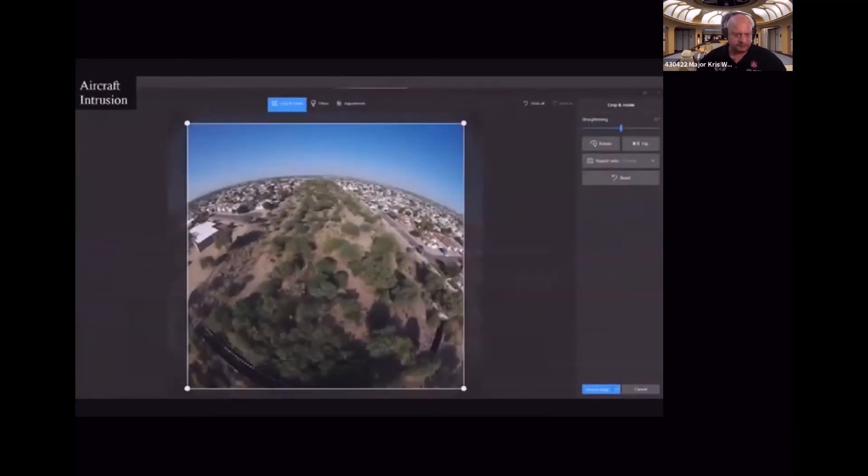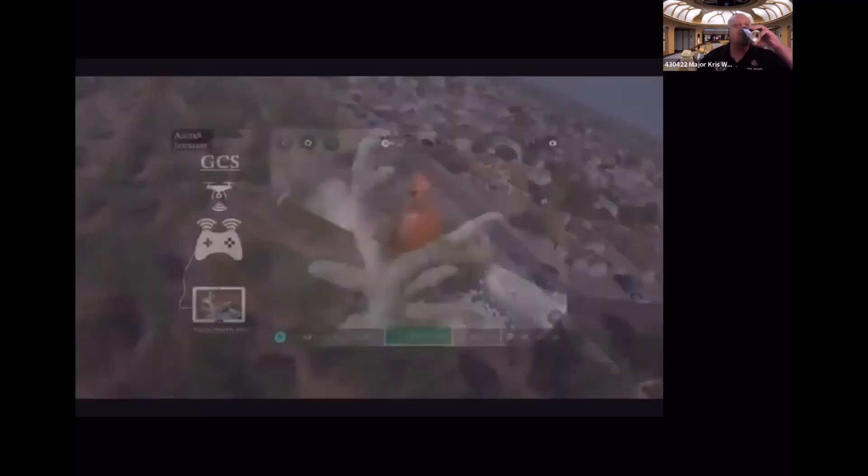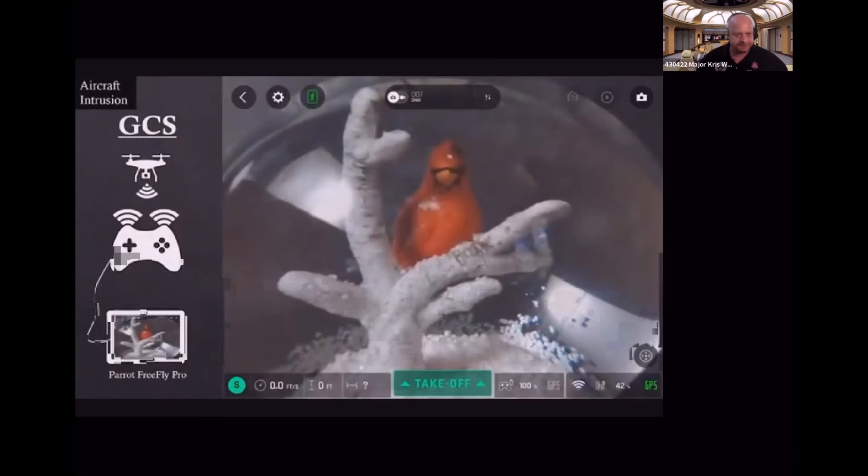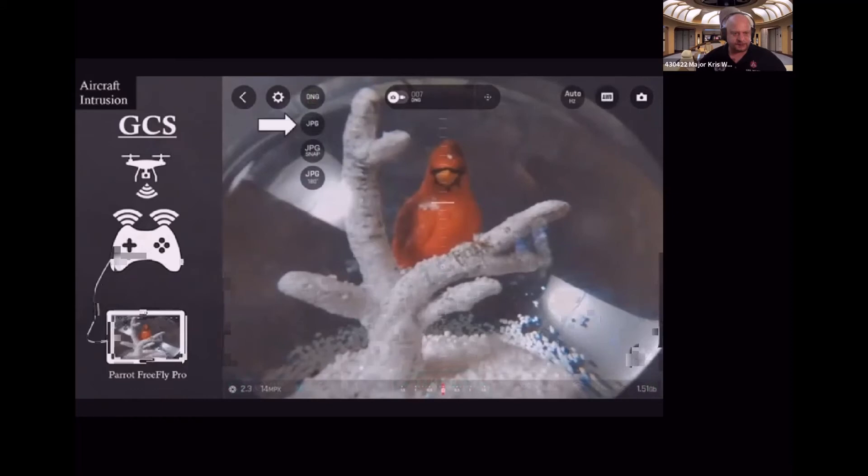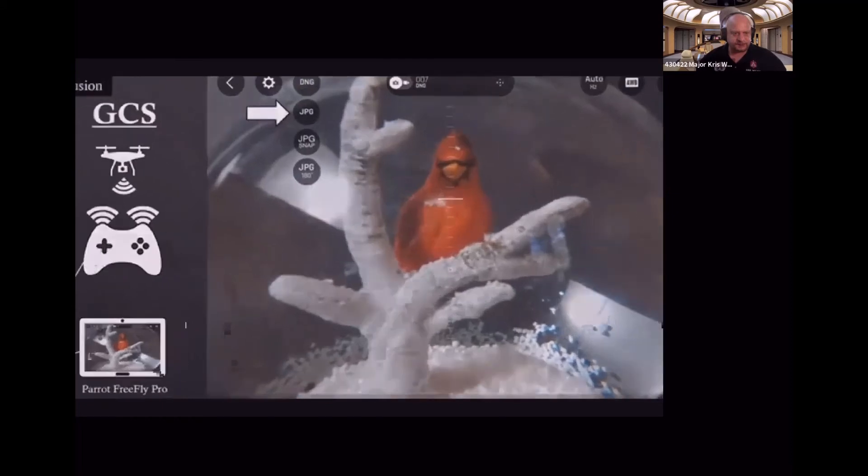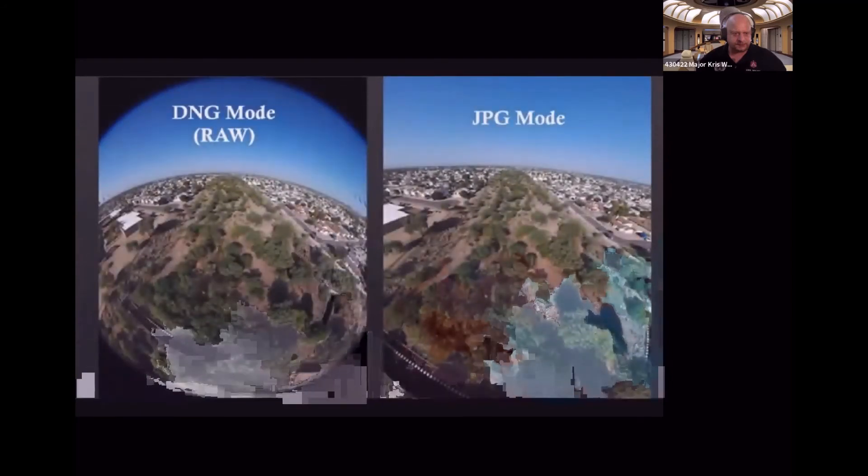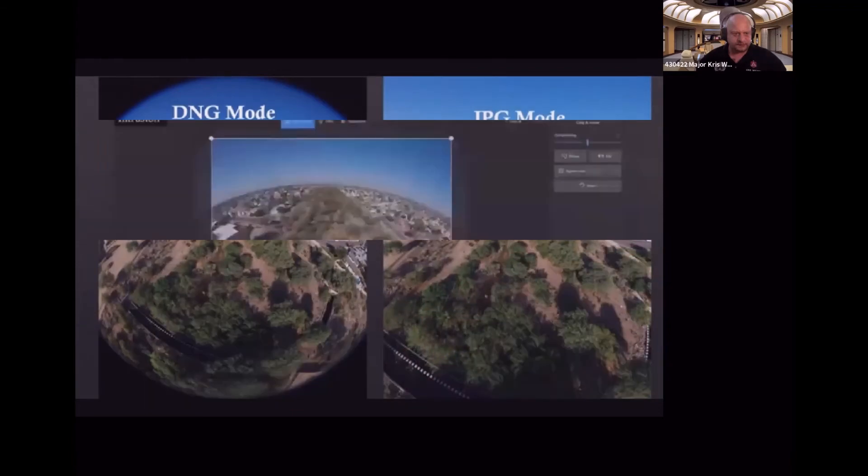You definitely don't want to get stuck cropping out propellers from the image, and even if you did the horizon still isn't straight. This is where strong knowledge of your GCS is important. We're basically using the same GCS setup but this time running Parrot's Free Flight Pro app on the iPad. You got to get into camera settings, then choose JPEG mode instead of DNG mode. All future pictures taken will now be auto-cropped with a straightened horizon, fitting our CAP standards of image composition.